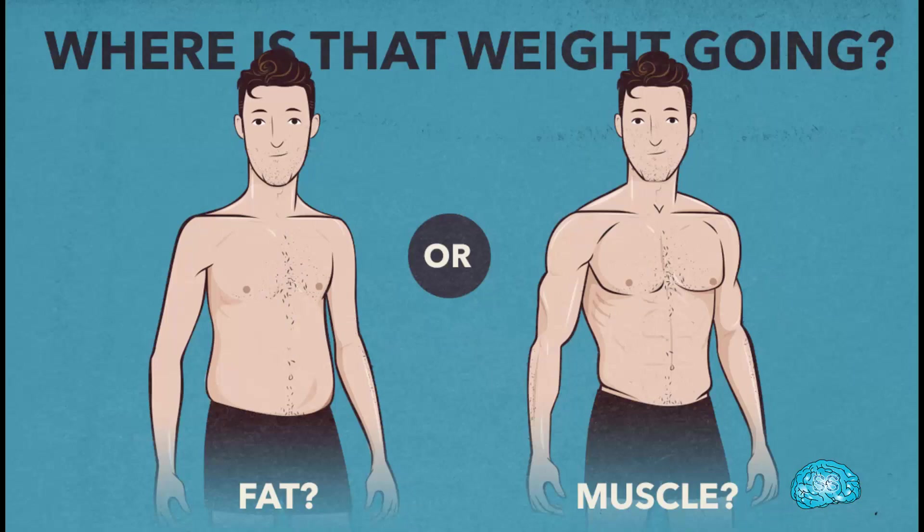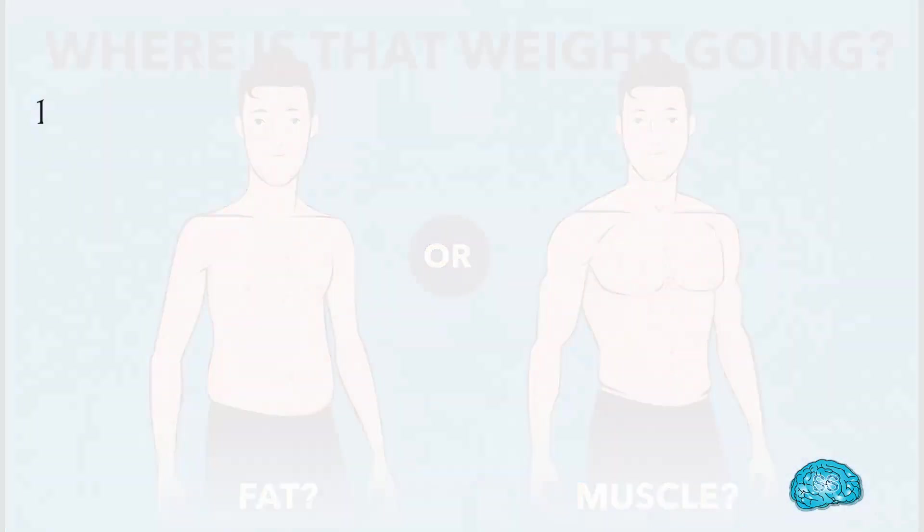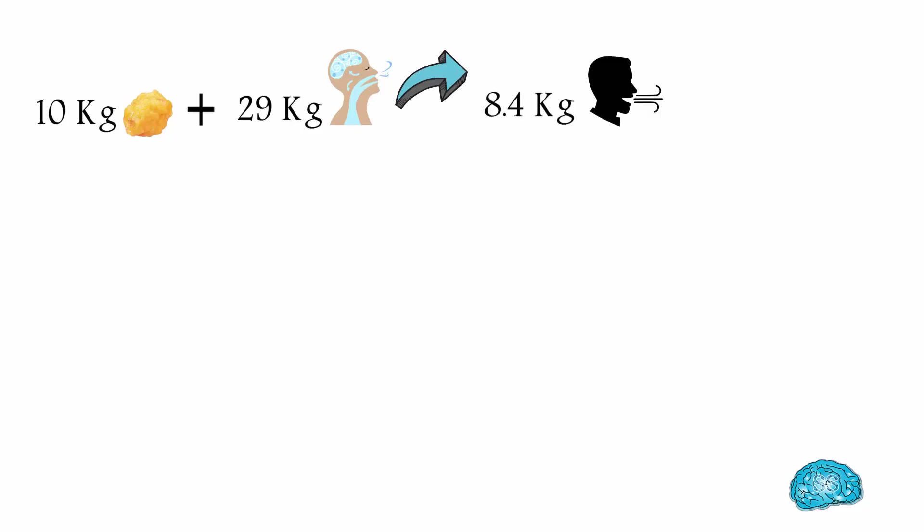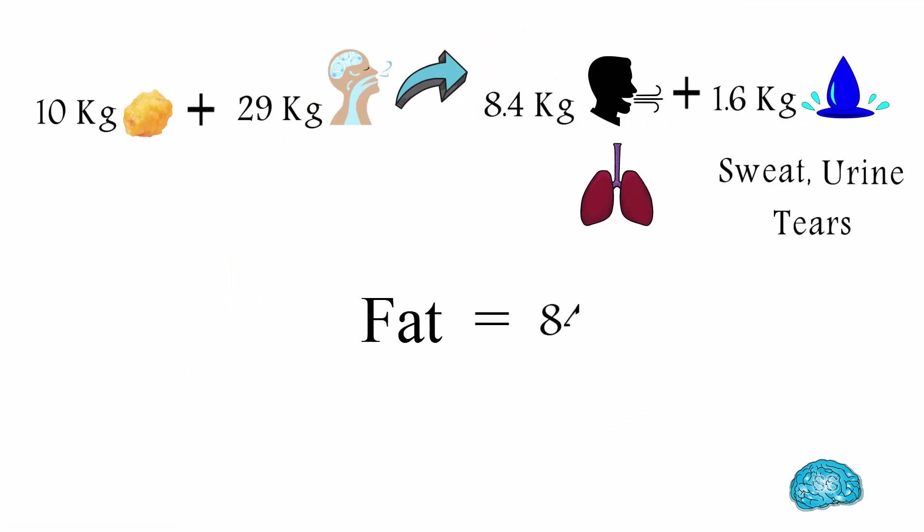Okay, let's now understand the mass distribution. If your body has 10 kg of fat, to burn it, you will need to inhale 29 kg of oxygen. Then the chemical reaction happens. After that, 8.4 kg of carbon dioxide is produced which you exhale and 1.6 kg of water is produced which comes out of your body as sweat, urine and even tears. This means that 84% of fat leaves your body as carbon dioxide and only 16% of fat leaves in the form of water.